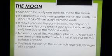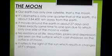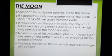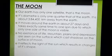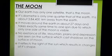Our Earth has only one satellite, that is the Moon. Until 1610, the Moon was known as the only satellite in the solar system, but later we came to know about other satellites, including human-made ones. The diameter of the Moon is one quarter of that of the Earth. It is about 384,400 kilometers away from the Earth.